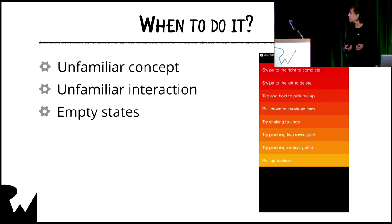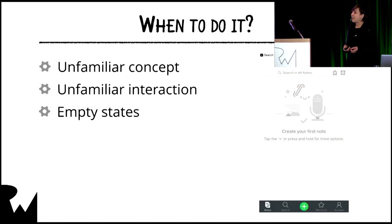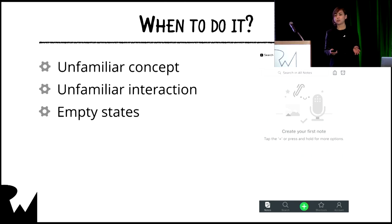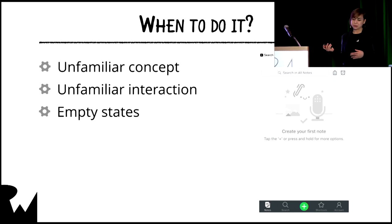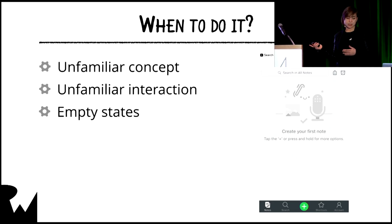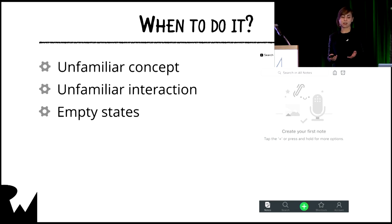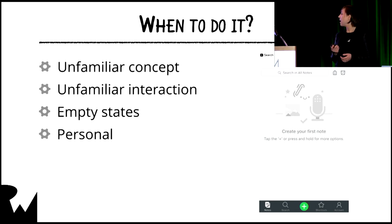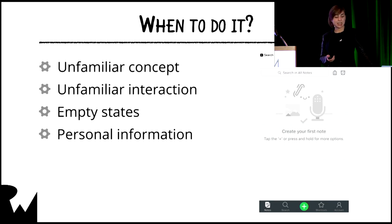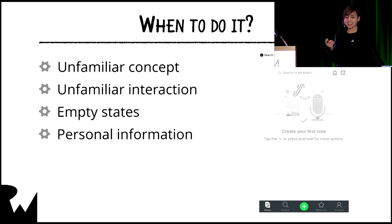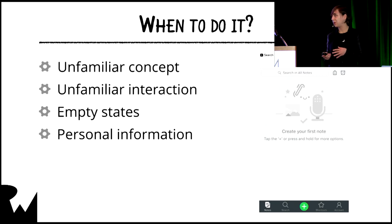The third situation is empty states. Having an empty state is actually really awesome because you can use that space to instruct and inform — just like Evernote. If you've never added a note, for example, it provides helpful and personal instructions on how to add a new note. And the last one is personal information. Asking for permissions out of the blue is a big no-no. You have to put the user in the context of why you're asking for whatever permission you're asking for before you do it.